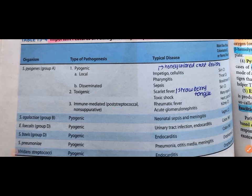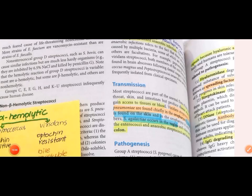The sites affected include the oropharynx (S. pyogenes, viridans, pneumoniae), skin, throat, bloodstream, kidneys, and heart joints. Normal flora sites include throat, skin, and intestine (fecalis, bovis, etc.). S. pyogenes and agalactiae can be transferred from the oropharynx/vagina to the skin and bloodstream.